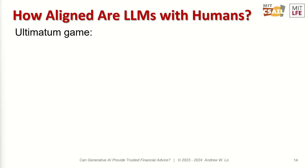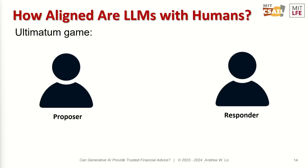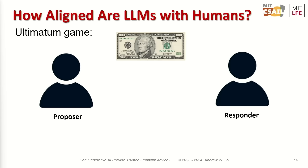I'm going to illustrate this through a game called the ultimatum game, which economists have used to understand human interaction in specific economic settings. A proposer proposes to another individual how to divide a certain amount of money — say $10. The responder can either accept or reject the proposal. If the proposal is rejected, neither person gets the money. If accepted, the money is split according to what was agreed.